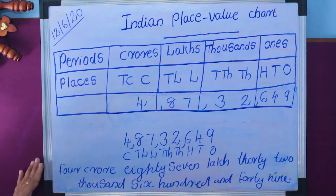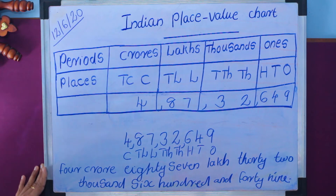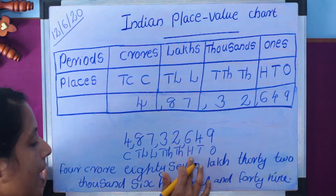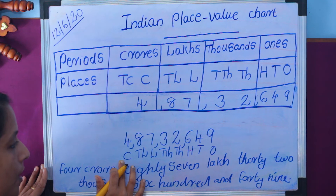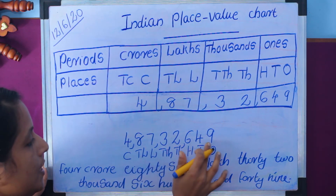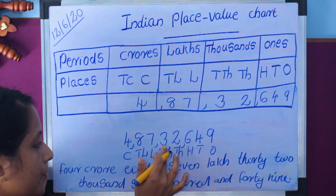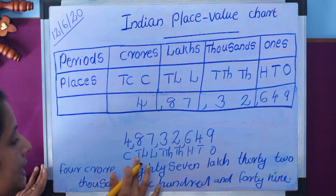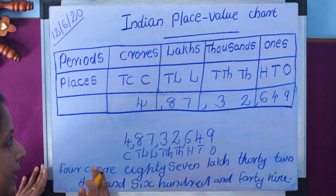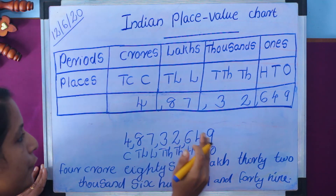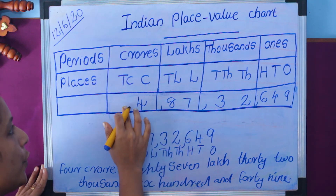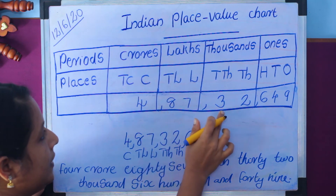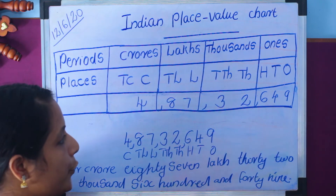Once again I explain the problem. Consider the number 48732649. First we write the place values: ones, tens, hundreds, thousands, ten thousands, lakhs, ten lakhs, crores. First comma after the hundreds place, second comma after the ten thousands place, third comma after the ten lakhs place. We write this number inside our table and read it as 4 crore, 87 lakh, 32,649.